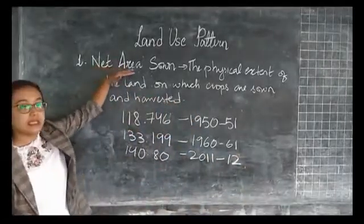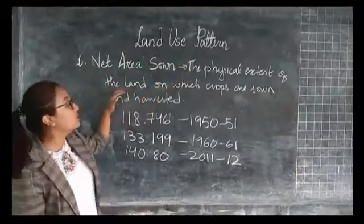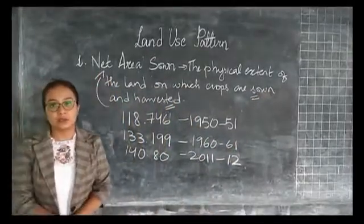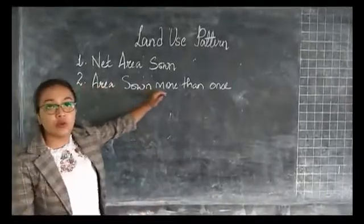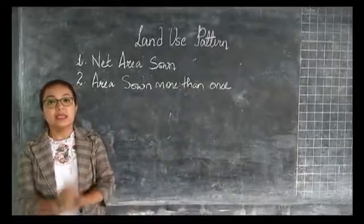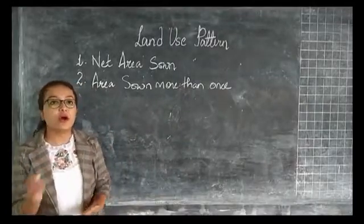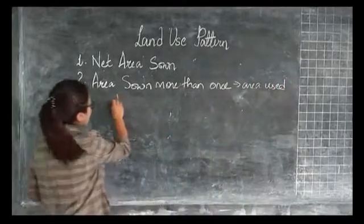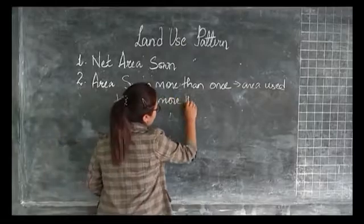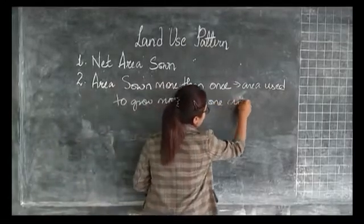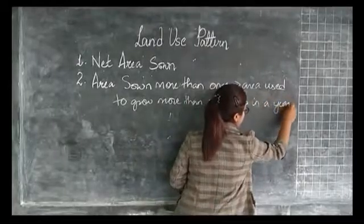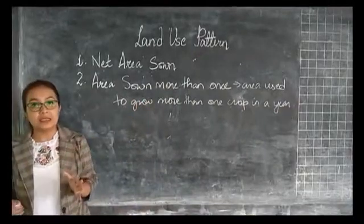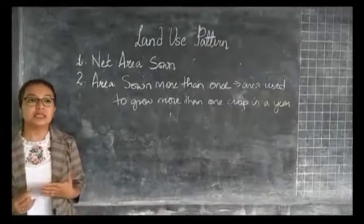The physical extent of the land on which the crops are sown and later rested is considered as your net area sown. The next category we have is area sown more than once. As the name itself indicates, this area is used to grow more than one crop in a year. This type of area comprises land with rich fertile soil and regular supply of water.